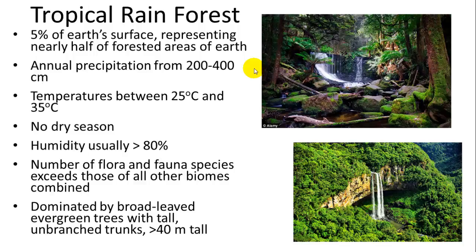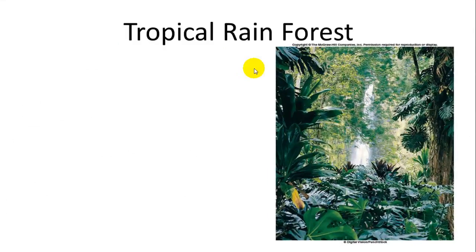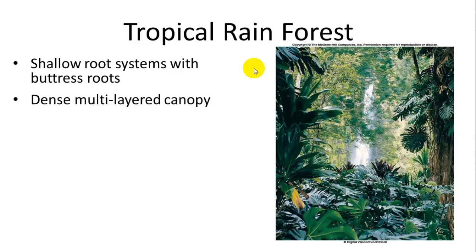The floral and faunal species exceeds those of all other biomes, so it is very biodiverse. It is dominated by broad-leaved evergreen trees with tall unbranched trunks greater than 40 meters tall. They don't generally shed their leaves because there is no seasonal variation in rain or light. The soil is not very deep or thick and is usually nutrient-poor, so trees have extensive root types including buttresses, which help anchor them into the soil. There is usually a dense multi-layered canopy, with things growing on the forest floor, on trees, including vines, epiphytes, and trees extending up into the canopy.